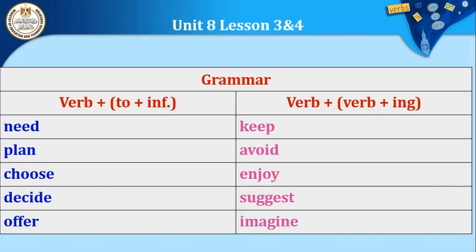Now for grammar — verbs in English are divided into two groups. The first group: verb plus 'to' plus infinitive — for example: 'I need to study hard', 'I need to eat', 'I need to play', 'I plan to travel abroad', 'I choose to...'. The second group: verb plus '-ing' — for example: 'I keep listening to music', 'I avoid watching TV', 'I enjoy traveling abroad', 'I suggest going to the cinema', 'I imagine having a plane'.